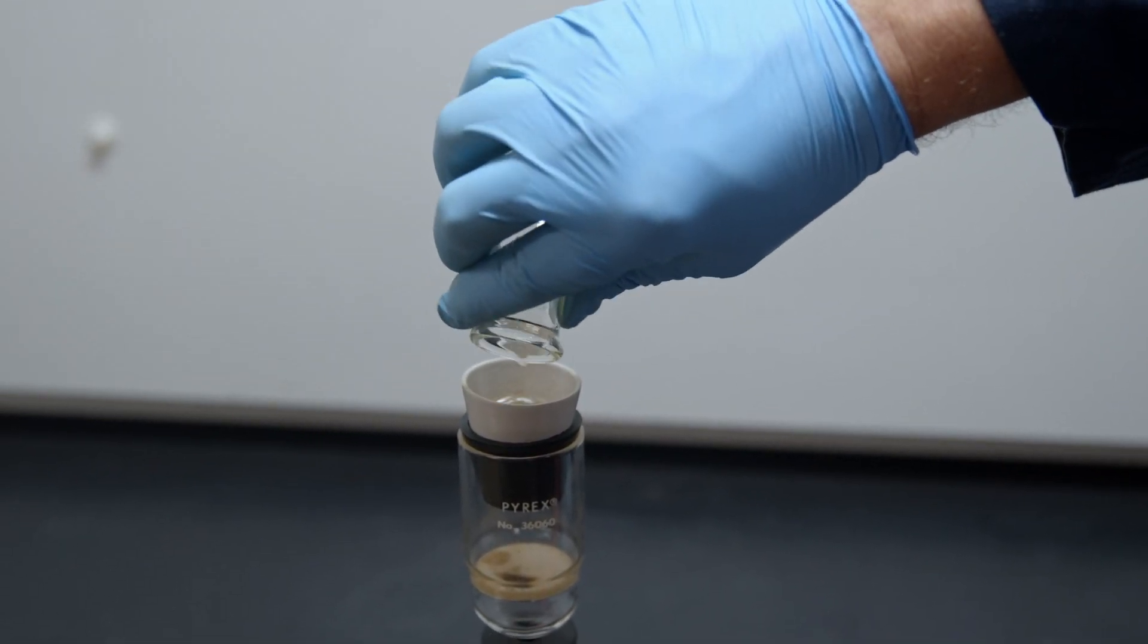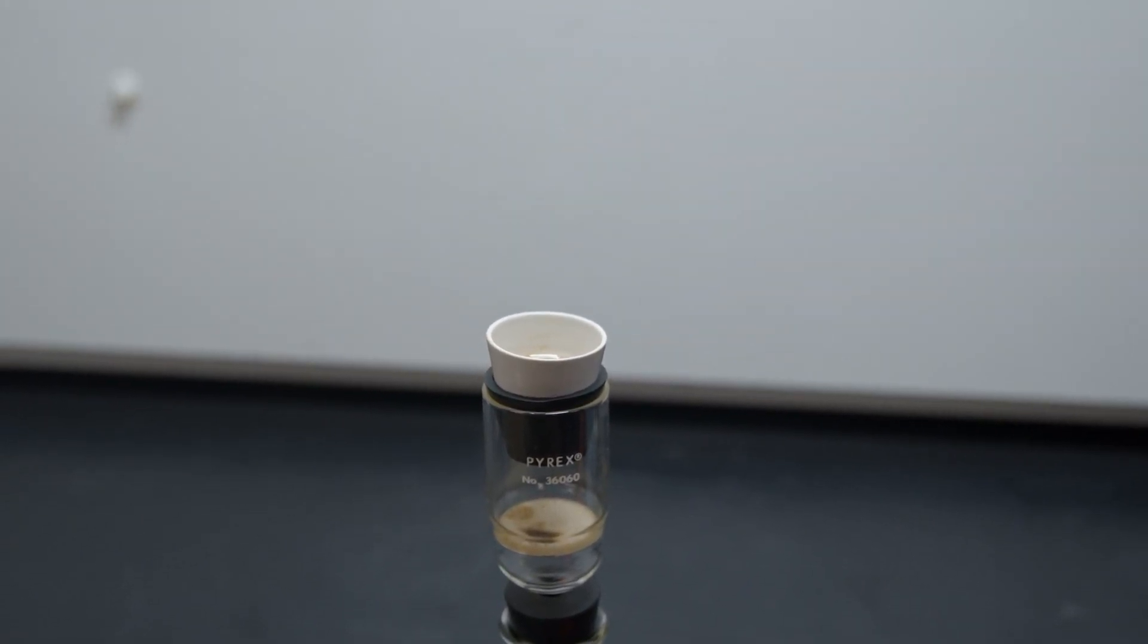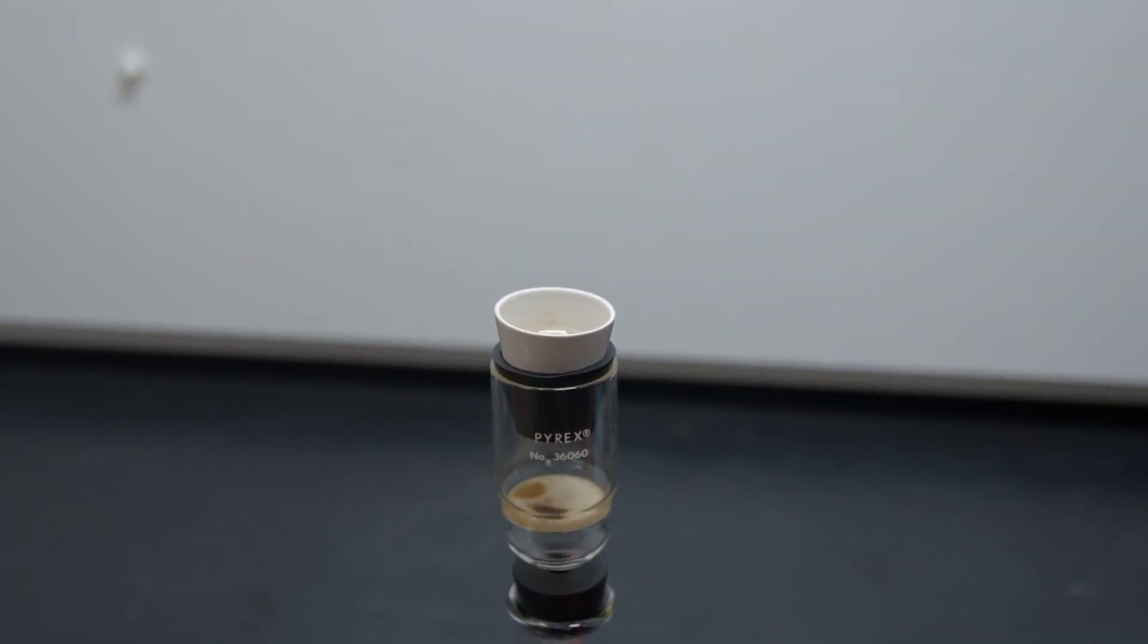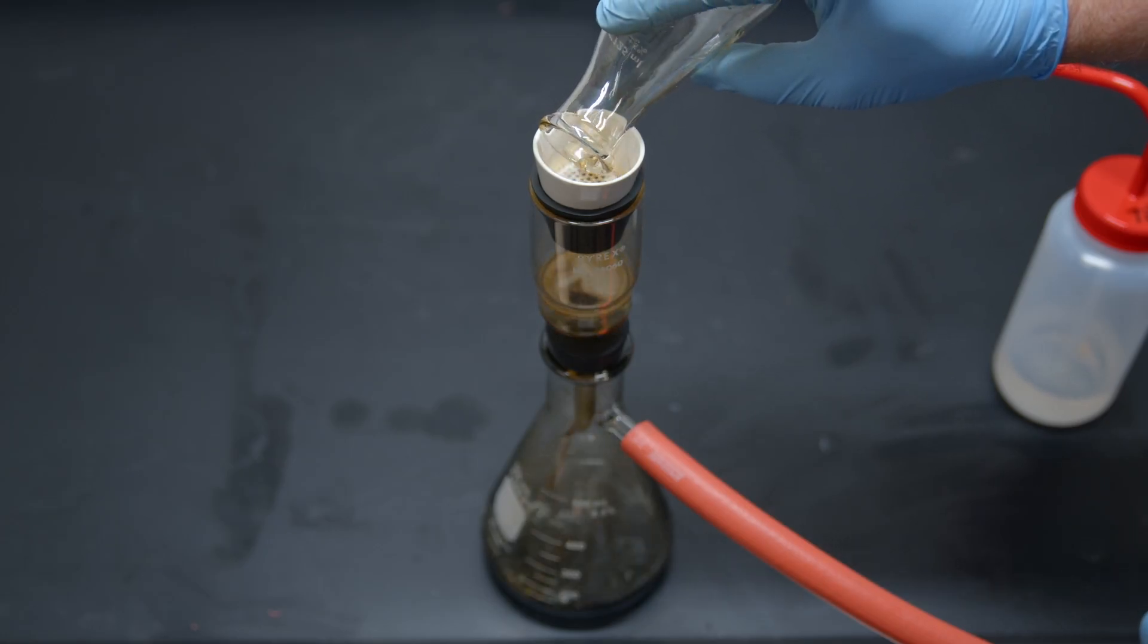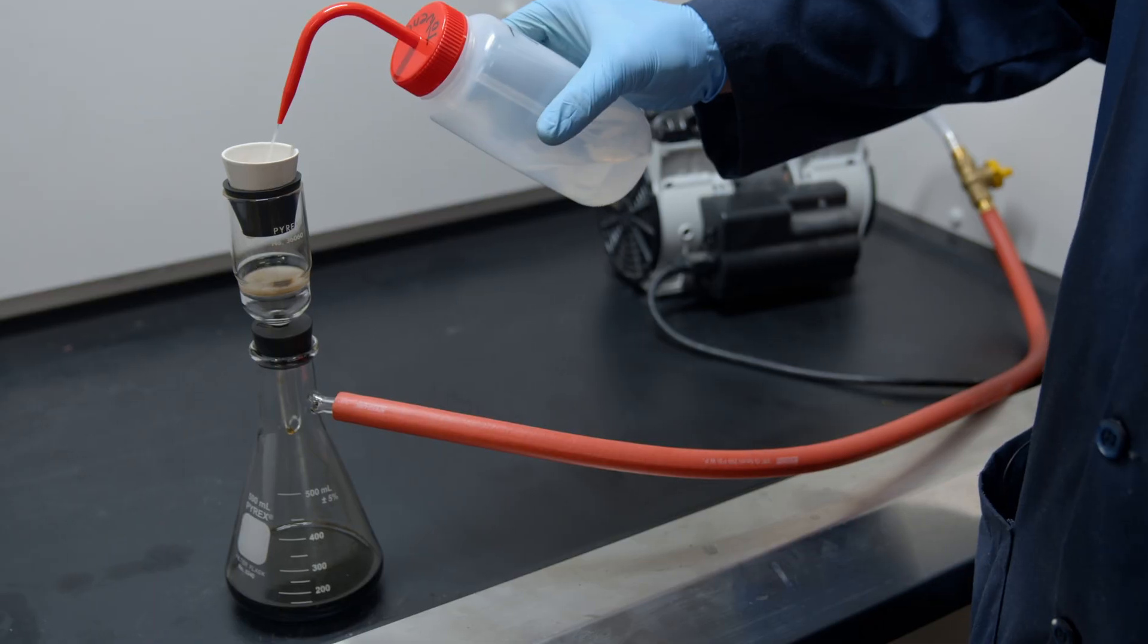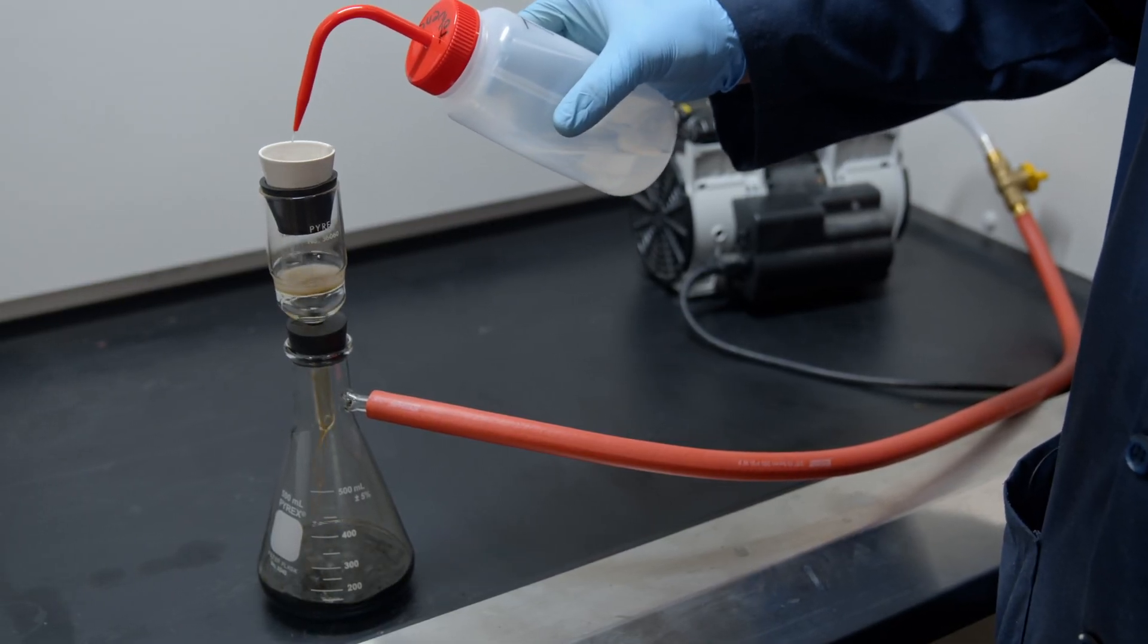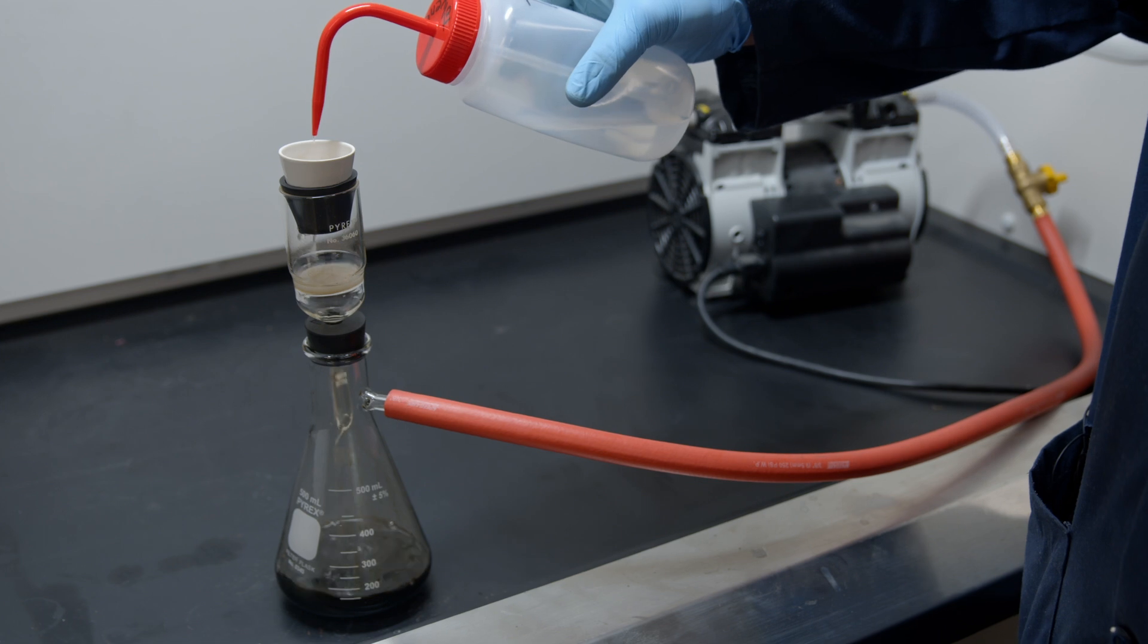Use a policeman if necessary to remove remaining insoluble material from the container. Rinse the policeman and container over the crucible. Rinse the insoluble material in the crucible until the filtrate is mostly colorless.